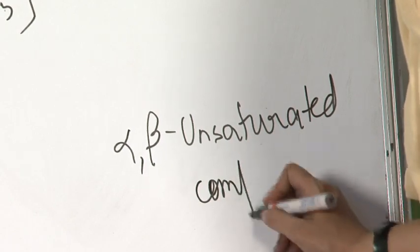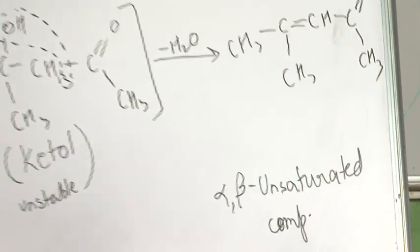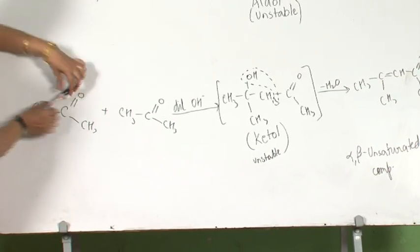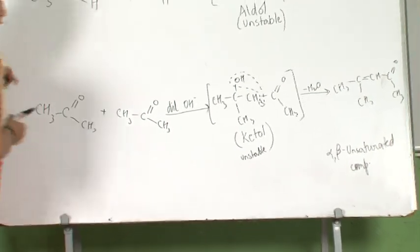What do I mean by alpha-beta unsaturated compound? I hope all of you know what an alpha carbon atom is and what a beta carbon atom is. Like in this case, this is my functional group. So this is alpha, this is beta. The next carbon atom will also be beta.